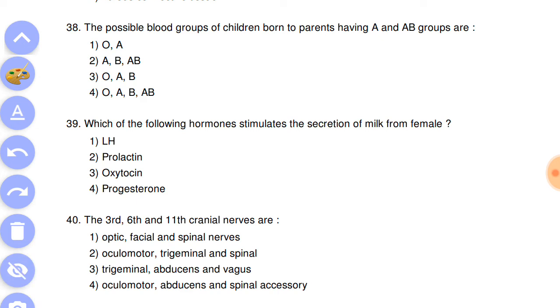Next question: the possible blood groups of children when the parents have A and AB groups are answer is the second, A, B, and AB.